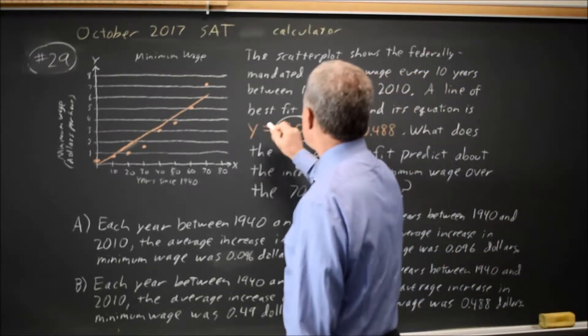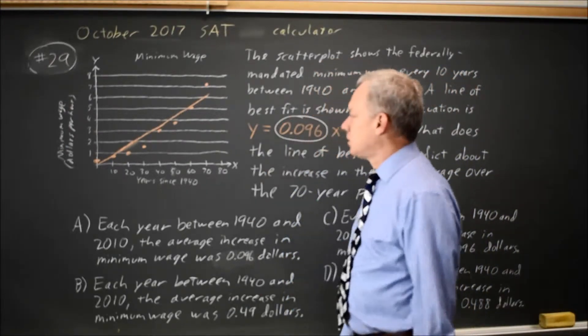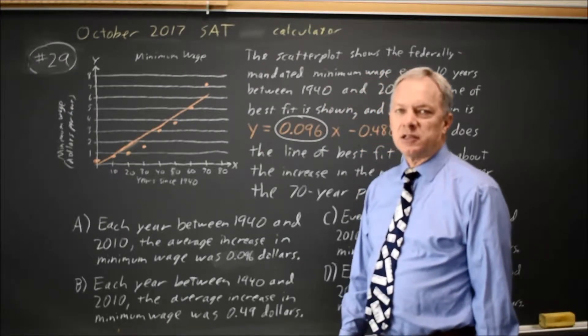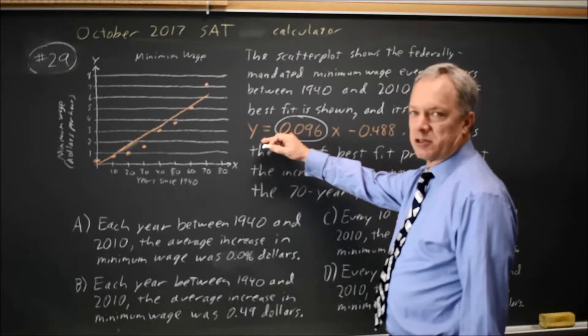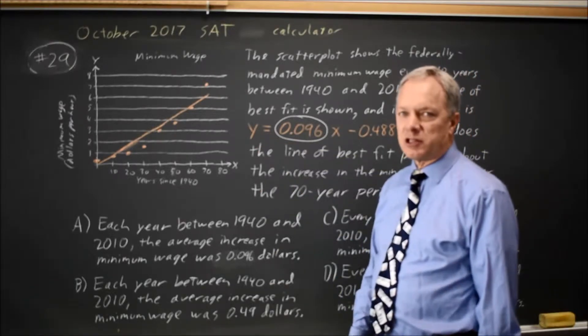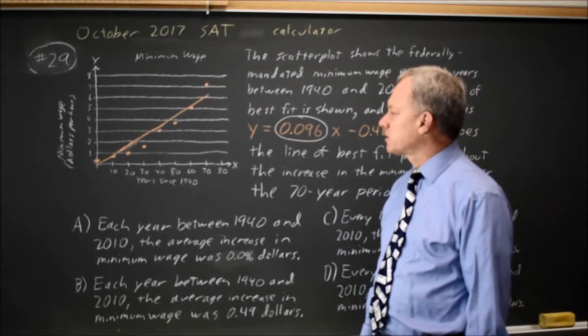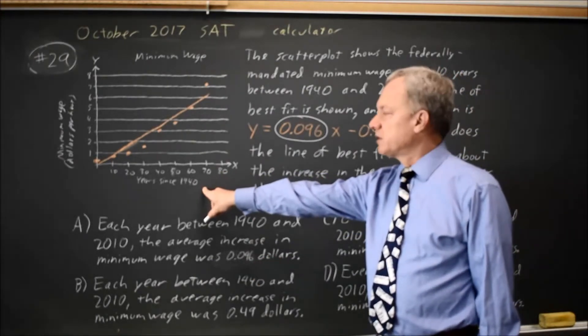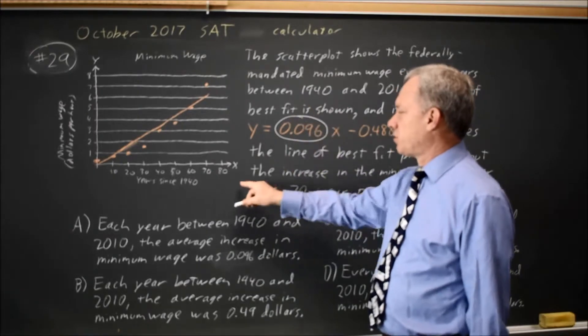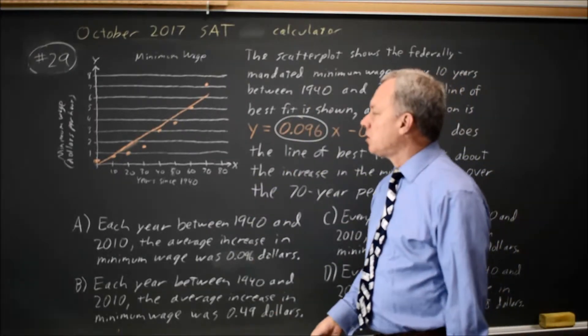The slope in this equation is .096, where our variable x is years, not decades. And if you're not sure whether x is years or decades, because unusually for College Board, they did not tell us what x stands for, the x-axis is labeled years since 1940, so even though it's not explicit in the paragraph, it's in the label.